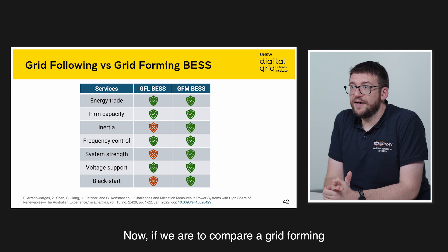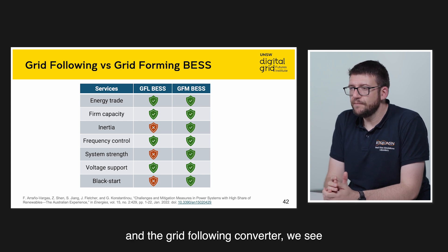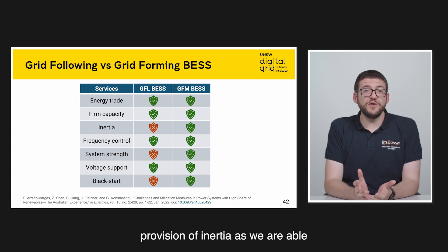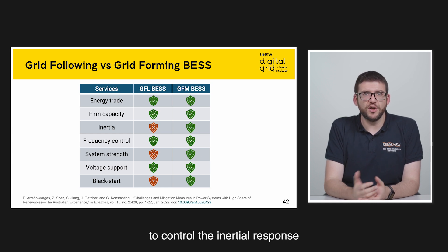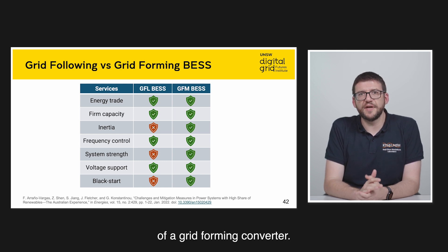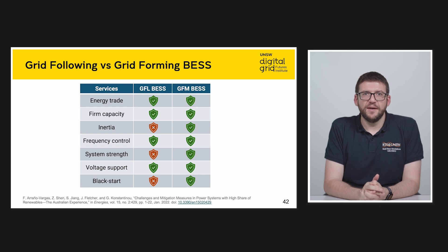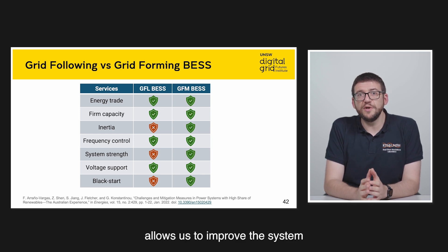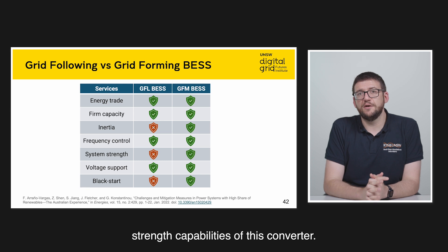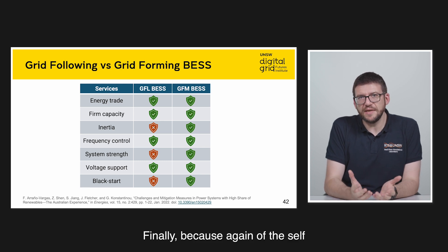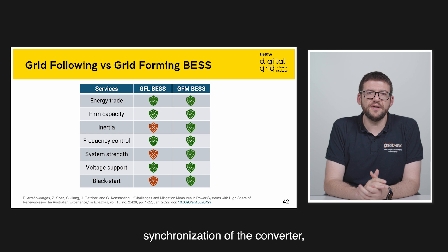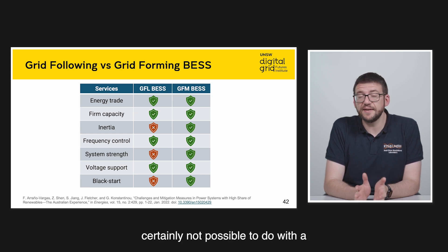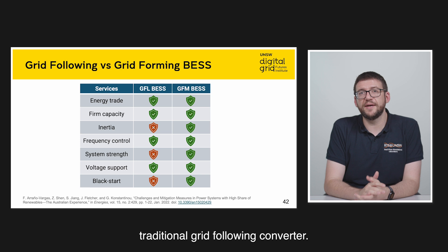If we are to compare a grid-forming and a grid-following converter, we see fundamental differences in three aspects. Firstly, with the provision of inertia, we are able to control the inertial response of a grid-forming converter. The fact that the converter also synchronizes to its own reference allows us to improve the system strength capabilities of this converter. Finally, because of the self-synchronization of the converter, we are able to offer black start capabilities, something that is certainly not possible to do with a traditional grid-following converter.